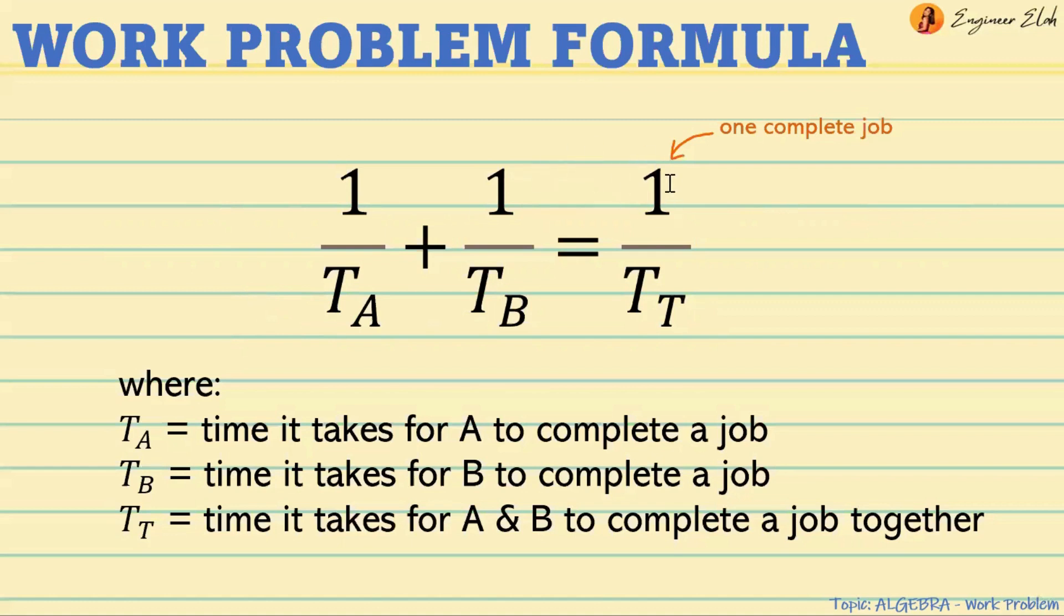So the 1 here denotes one complete job that is done by a person or a machine, and the T at the bottom is the time it takes for that specific person or machine to complete one job. So let's have some examples.